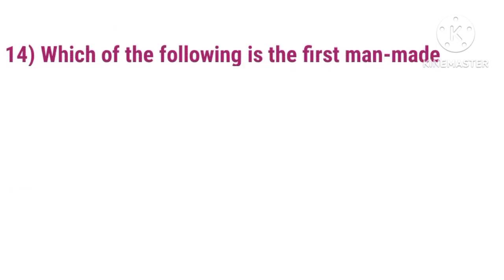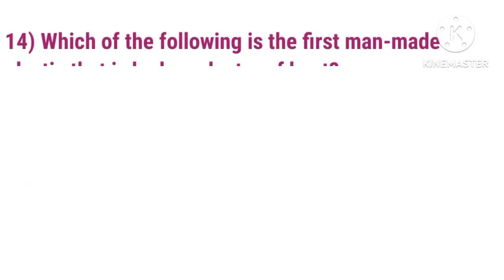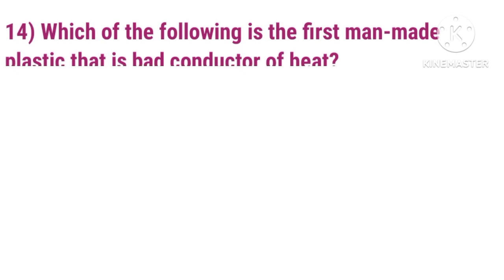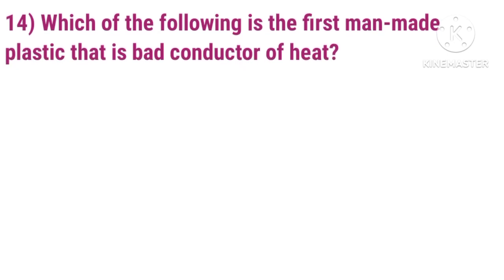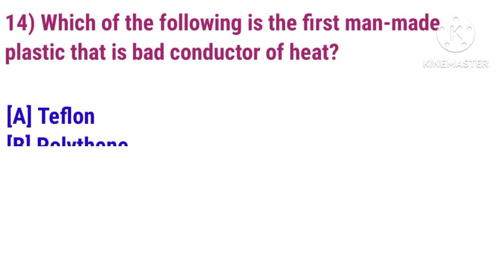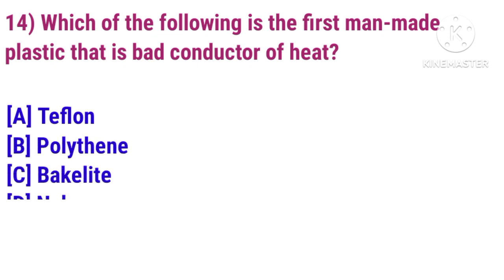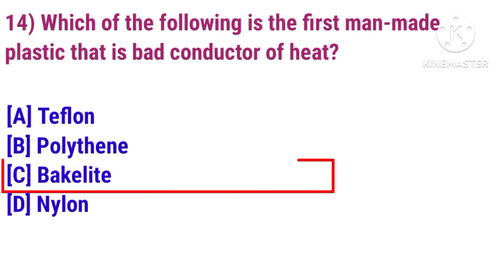Question 14: Which of the following is the first man-made plastic that is a bad conductor of heat? Answer is Bakelite.